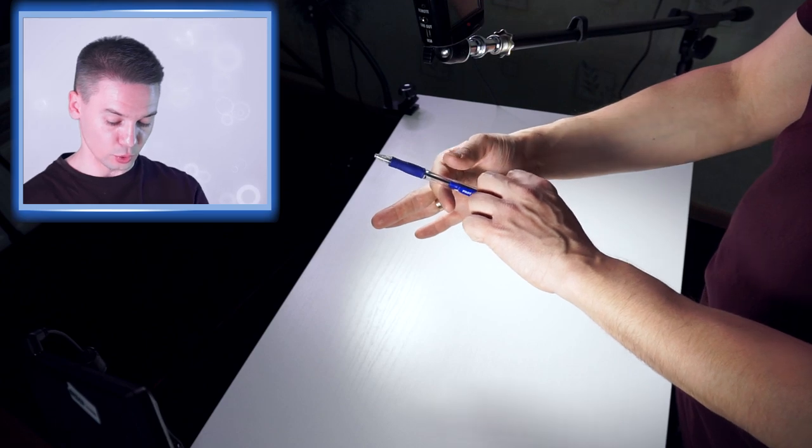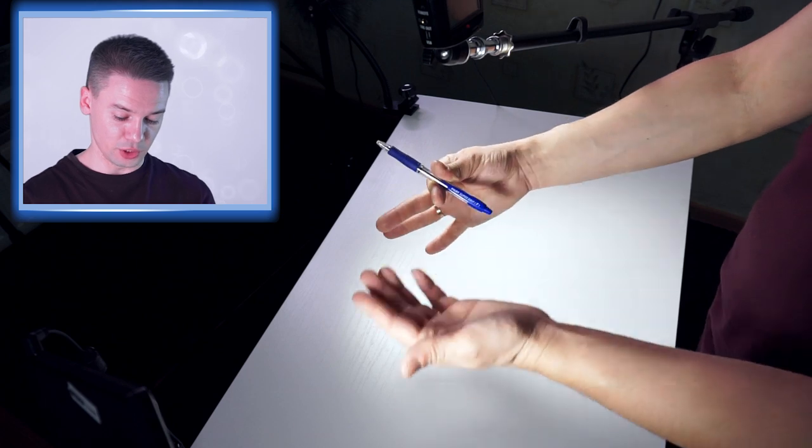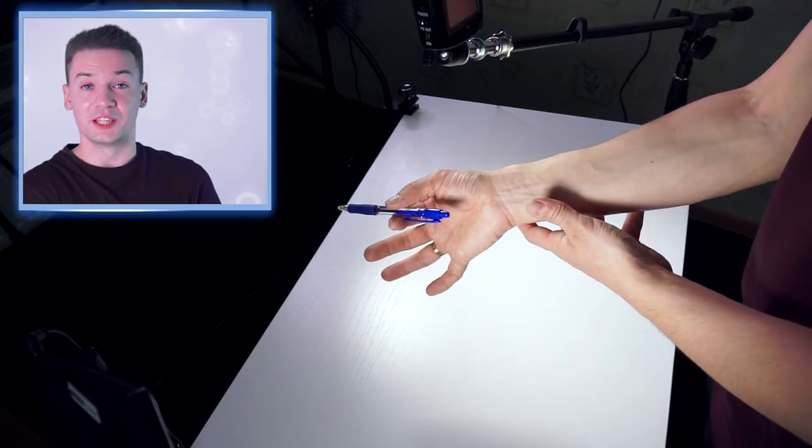When you see pen goes over index finger, you need to just tap it with thumb, squeeze it between these two fingers, fixing it in this position.